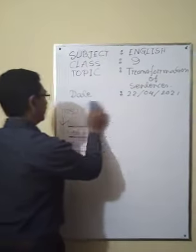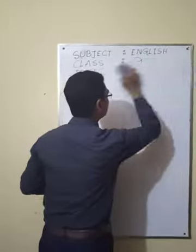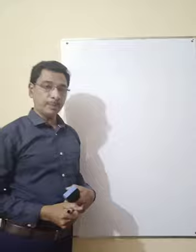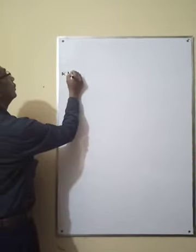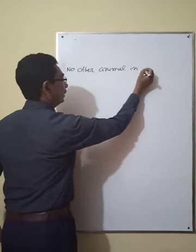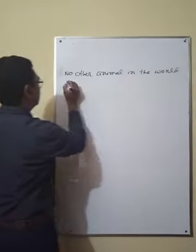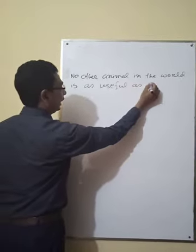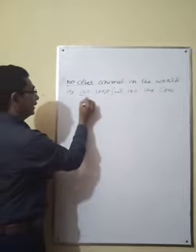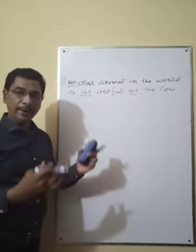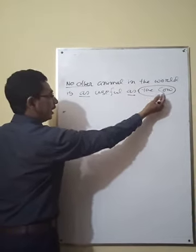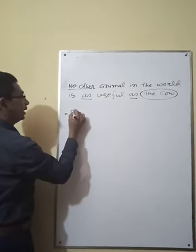Now I am going to discuss in detail. I welcome you all to understand how to change the sentence from positive to comparative or positive to superlative. For example: 'No other animal in the world is as useful as the cow.' This is a positive sentence — you can see the signs 'no other' and 'as...as.' The cow is the object of the sentence. You have to write down the object first: 'The cow.'